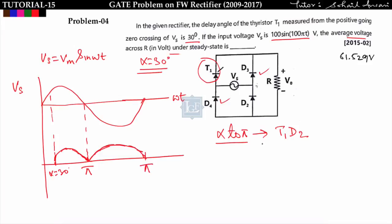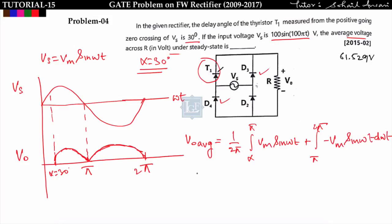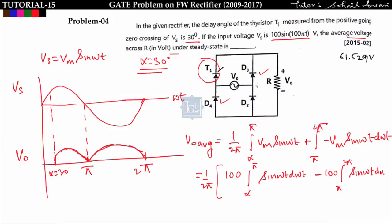From α to π, T1-D2 conduct; from π to 2π, D3-D4 conduct. The average output voltage is: V_out_avg = (1/2π) [ ∫(α to π) V_m sin(ωt) d(ωt) + ∫(π to 2π) (−V_m sin(ωt)) d(ωt) ]. With V_m = 100V and α = 30°, integrating gives V_out_avg = 61.529 volts.